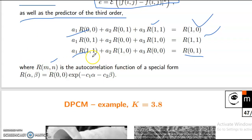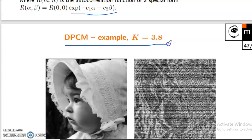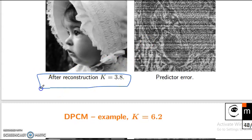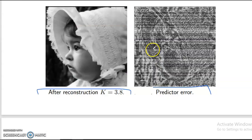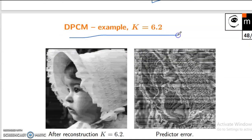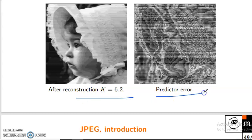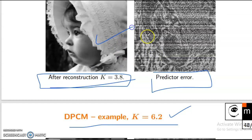Where R of (m, n) is the autocorrelation function of a special form: R(alpha, beta) equals R(0,0) times exponential of minus e1·alpha minus e2·beta. DPCM example: k equals 3.8 after reconstruction, predictor error. DPCM example: k equals 6.2, predictor error. Here k equals 6.38 predictor error.